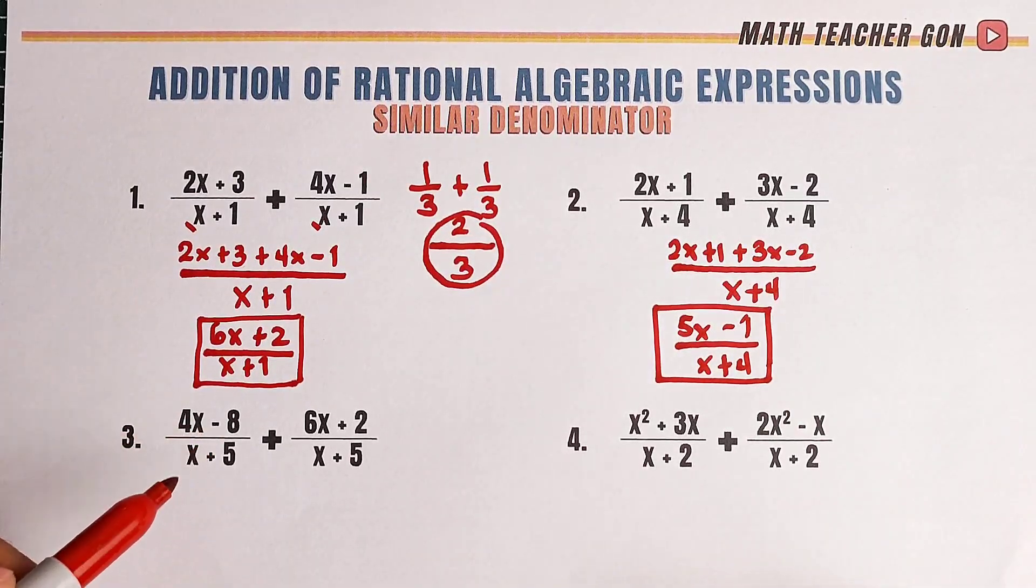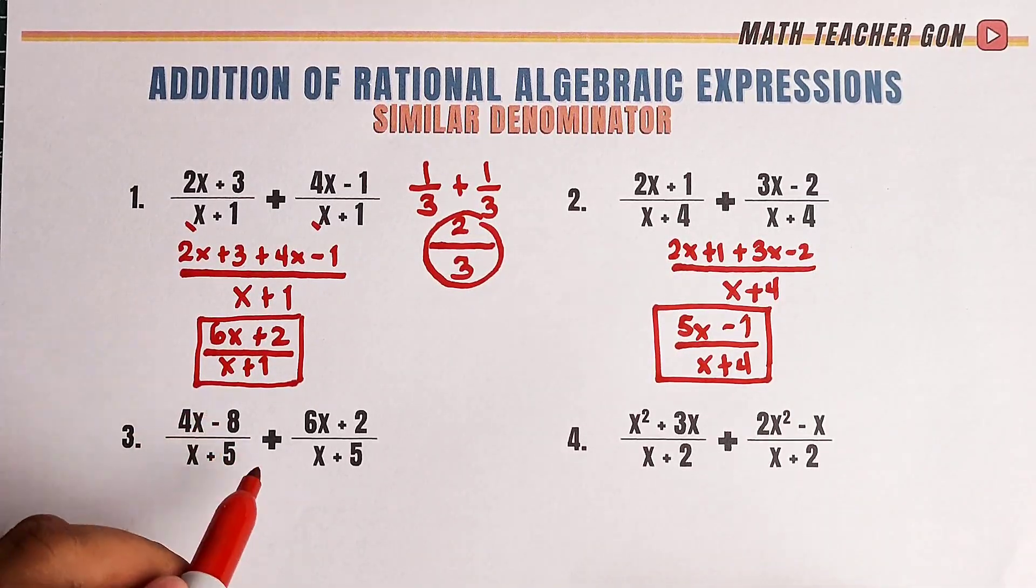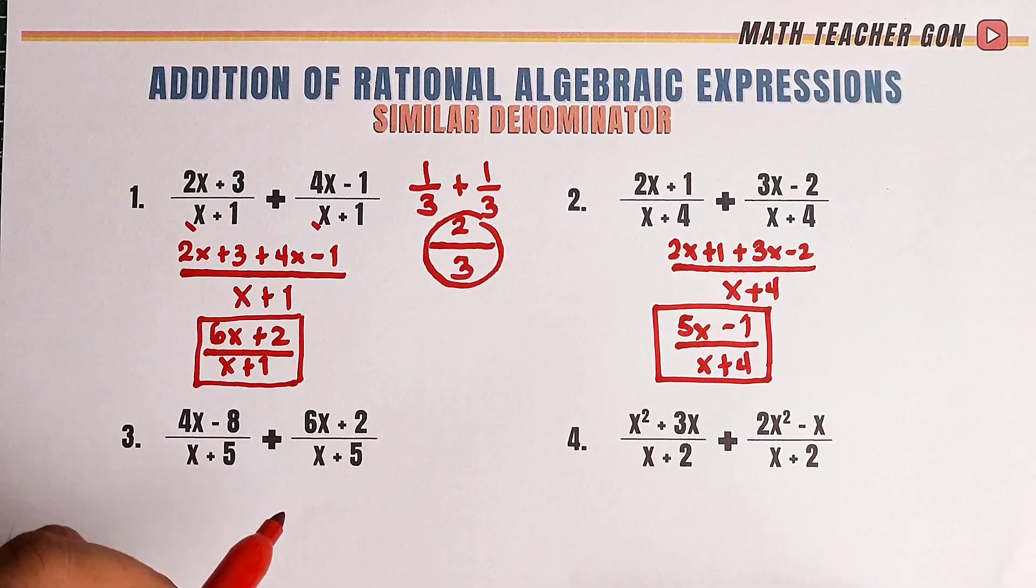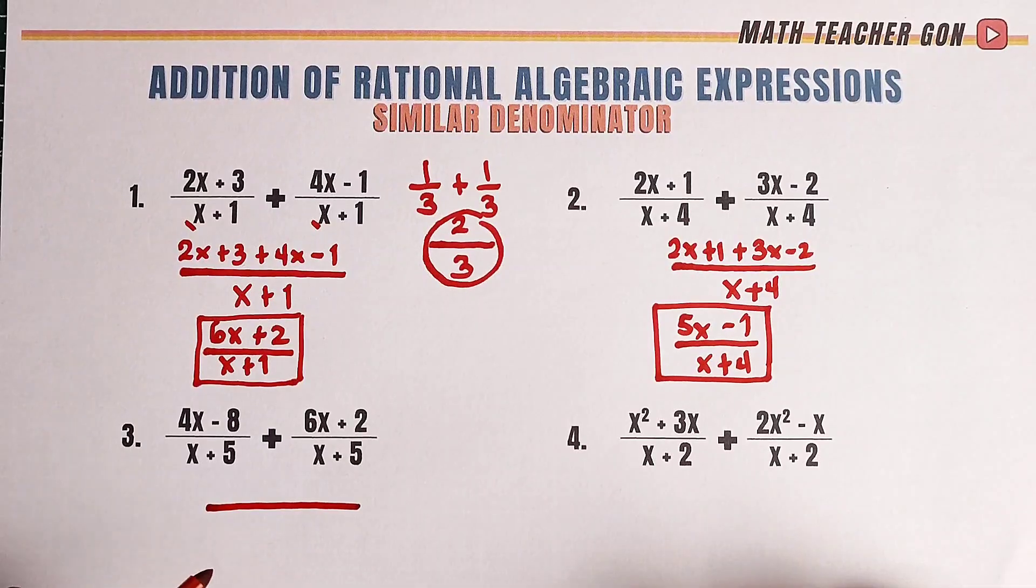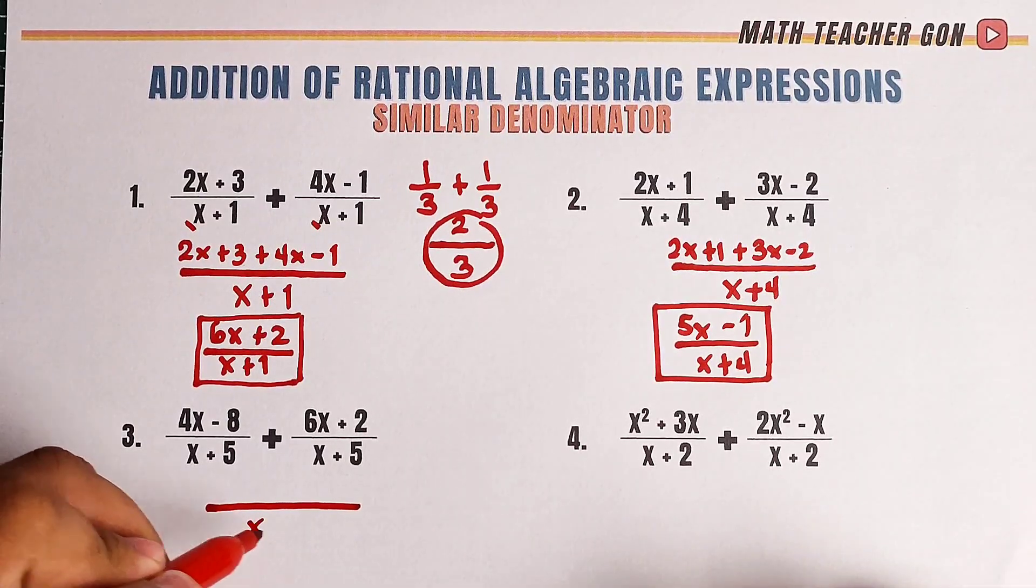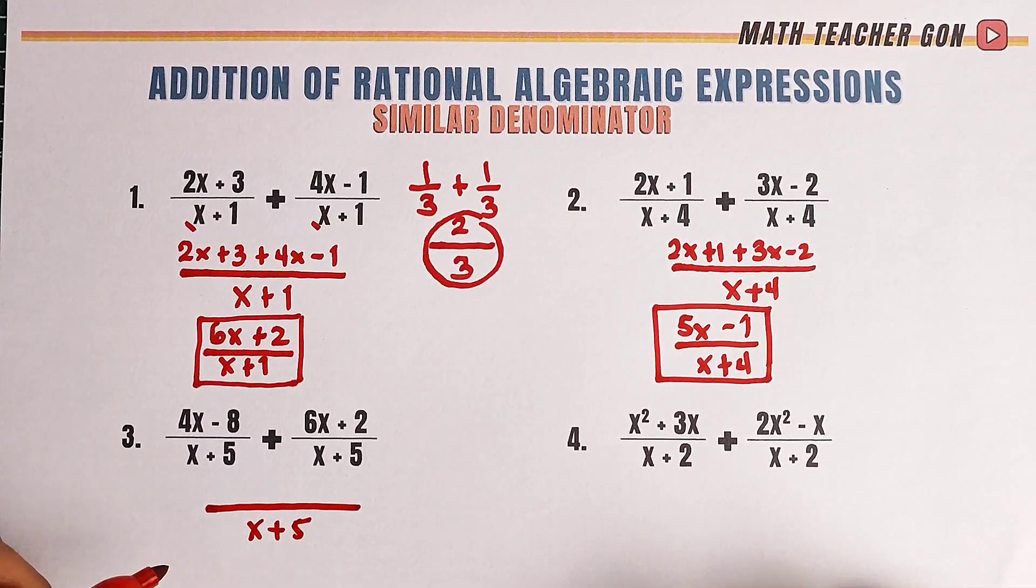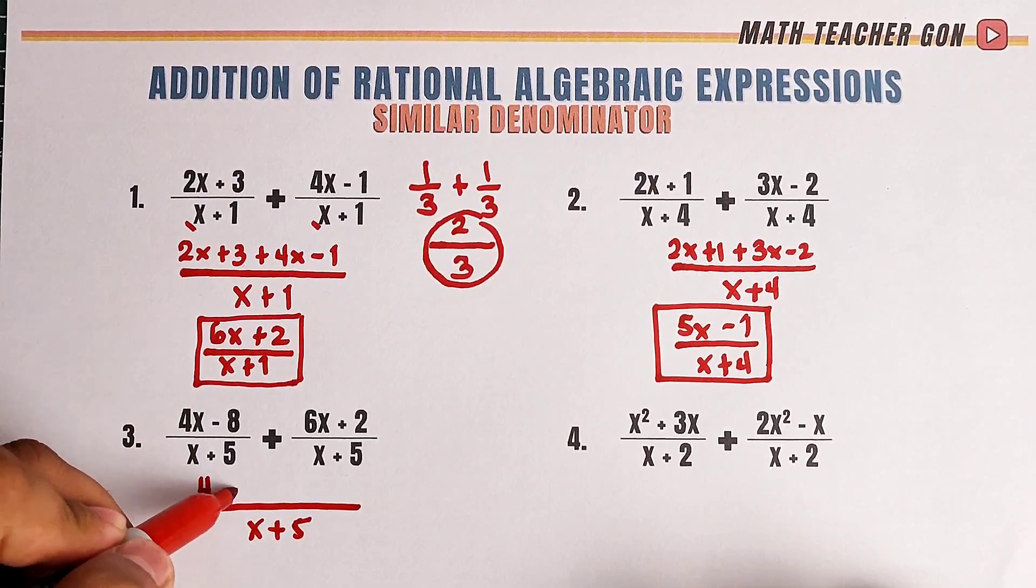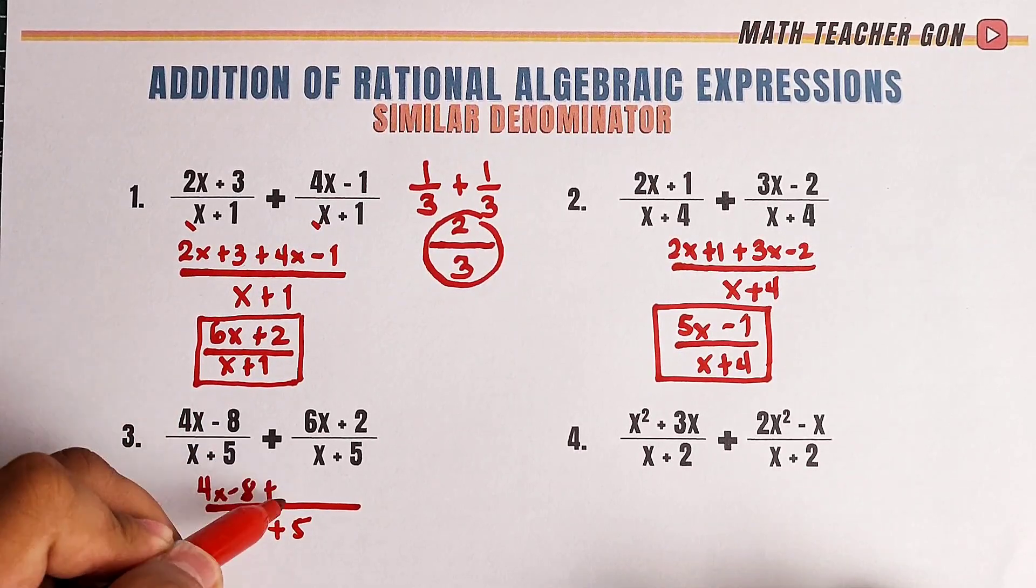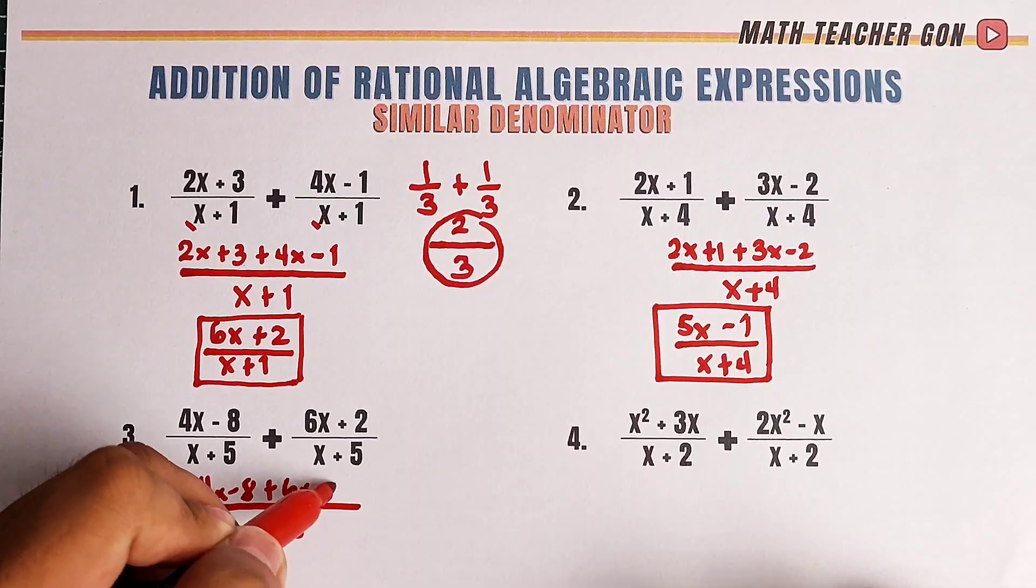We have 4x minus 8 over x plus 5 plus 6x plus 2 over x plus 5. So let me copy first the common denominator x plus 5. Now, put it here, 4x minus 8 plus 6x plus 2.